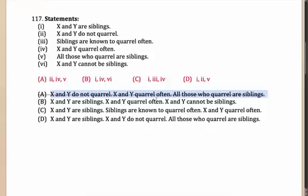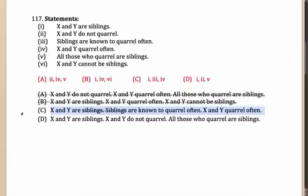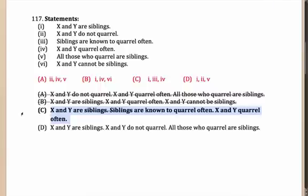Option C: X and Y are siblings; siblings are known to quarrel often. Here there is a common part — the siblings part. Eliminate that, and what are you left with? X and Y are known to quarrel often, and the conclusion is X and Y quarrel often. So this makes a logical statement, and C is our answer to this question. As you can see, this has become so much simpler.